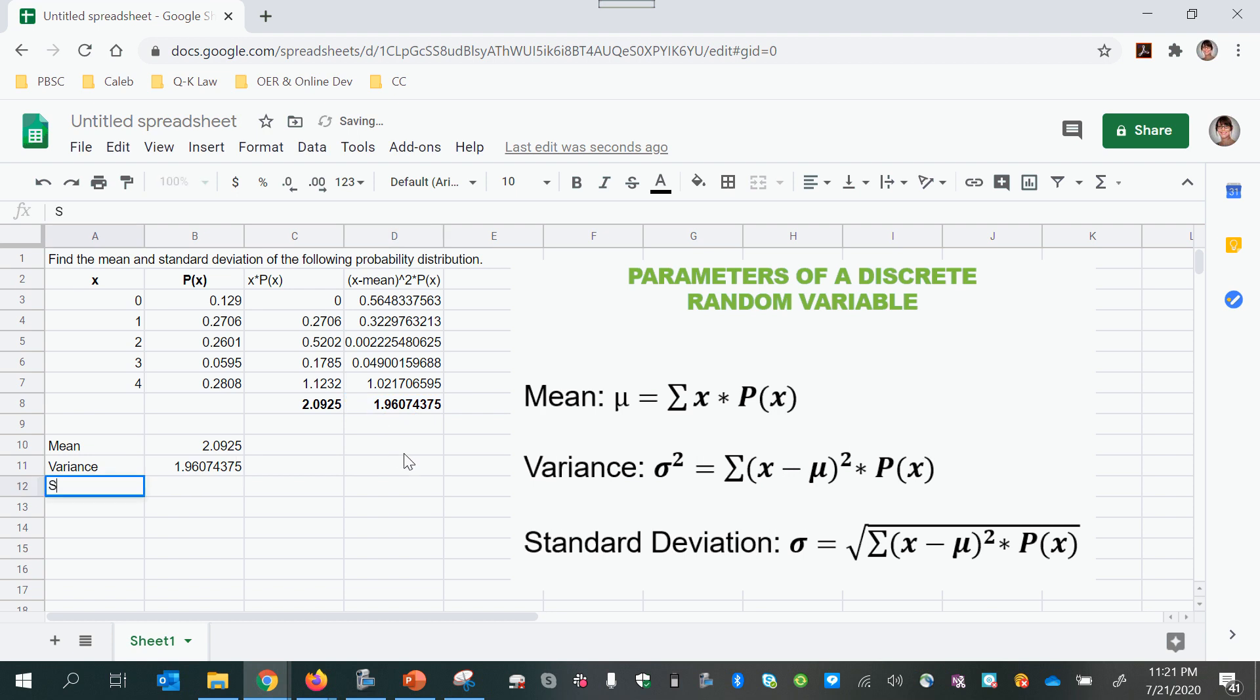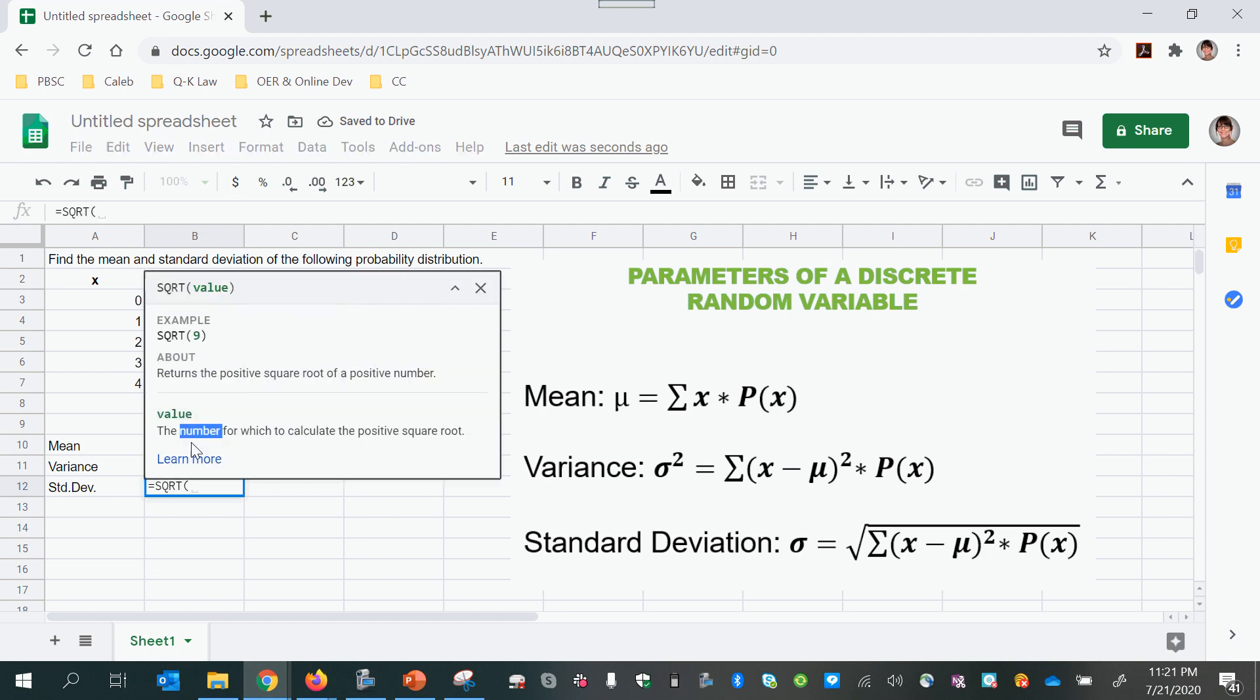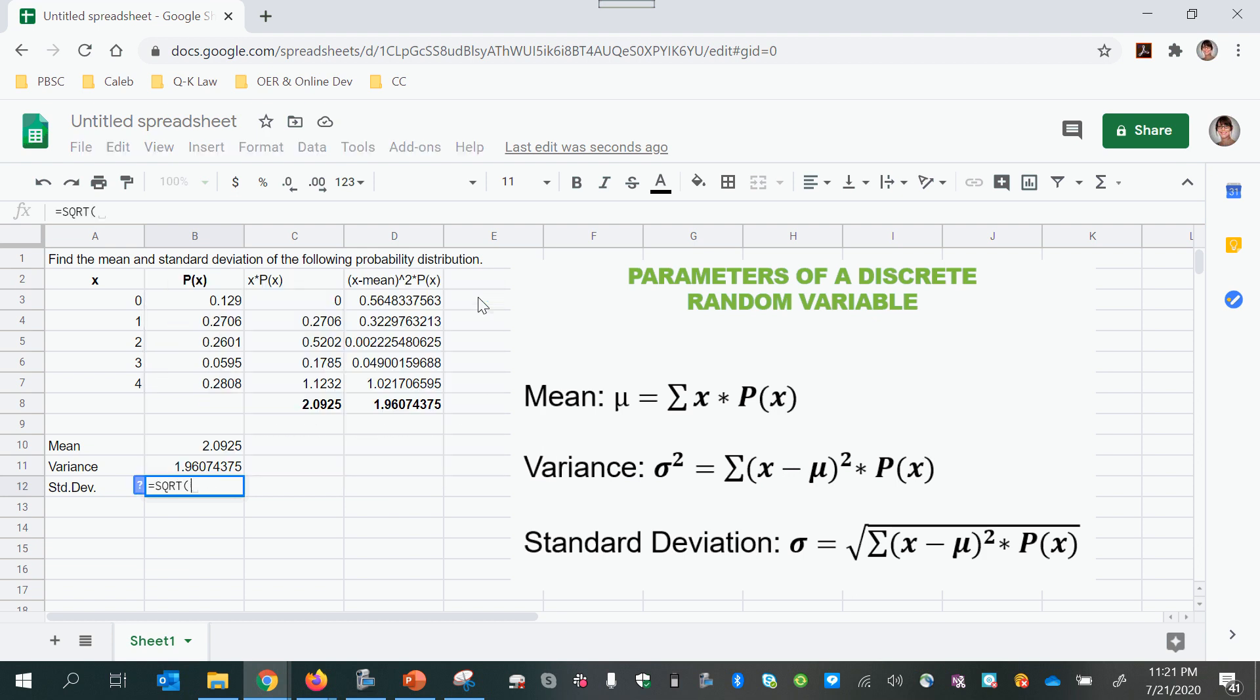Now the standard deviation is equal to the square root of the variance. And there we have all of our parameters.